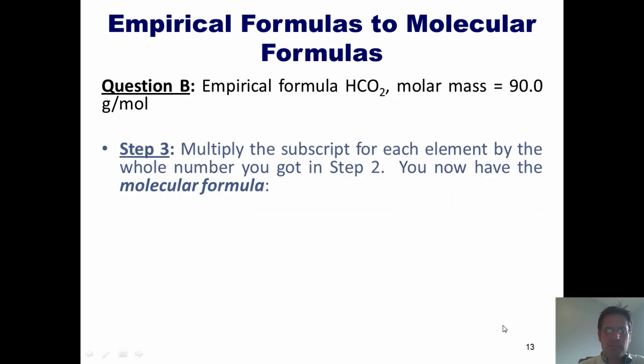Step three. Multiply the subscript for each element by the whole number we got in step two. Here's the original formula we're given. The whole number we got in our last step was two. So I multiply every single subscript by two, and I get H2C2O4. That is the actual molecular formula for this compound.